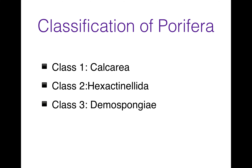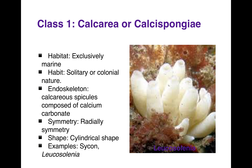Now we will see the classification of Porifera. They have three classes: Calcarea, Hexactinellida, and Demospongia. First, Calcarea, also known as Calcispongia. They are exclusively marine, may be solitary or colonial. They have calcareous spicules composed of calcium carbonate. They are radially symmetrical and cylindrical in shape. Examples are Sycon and Leucosolenia.